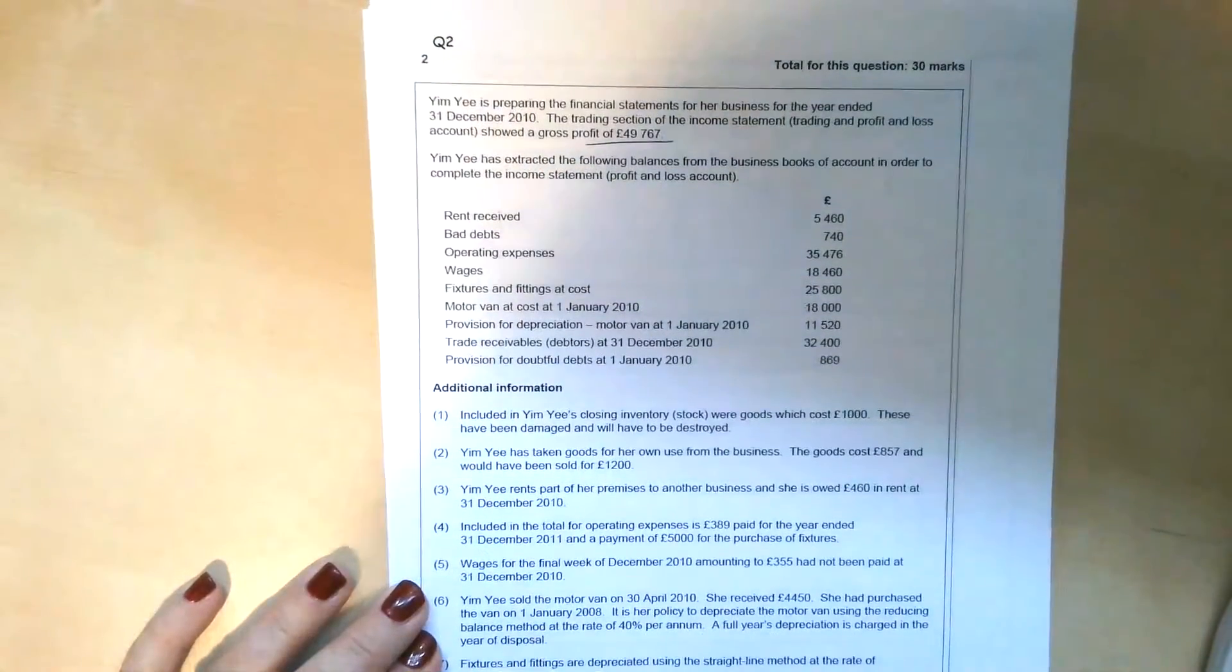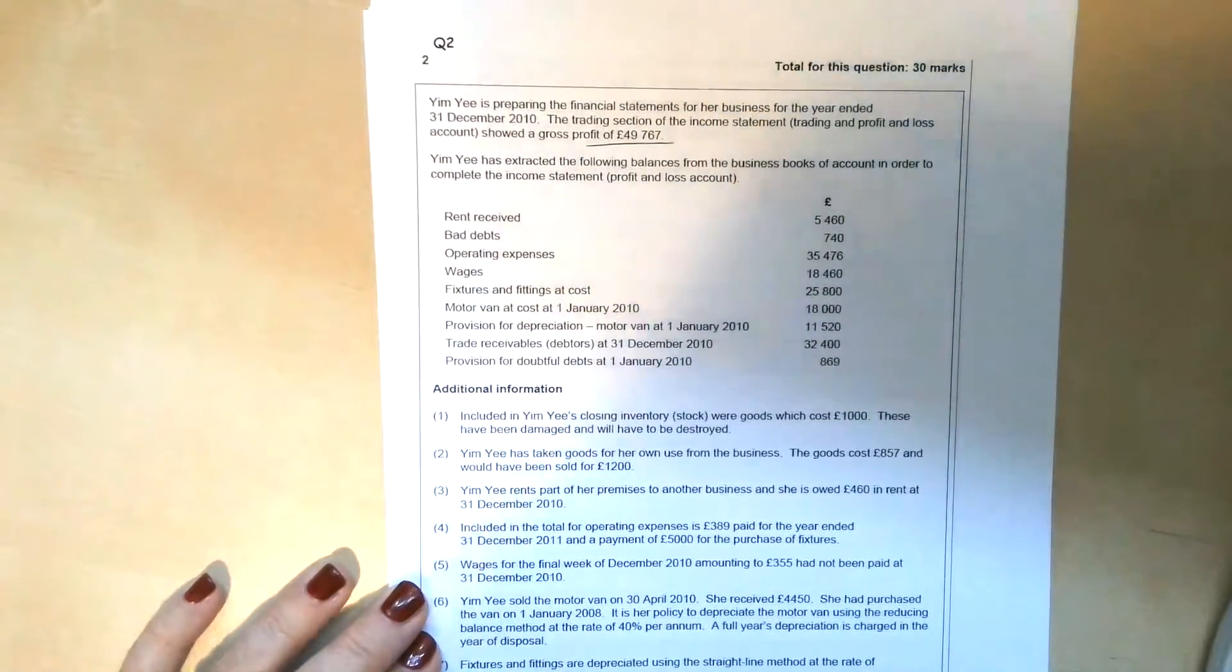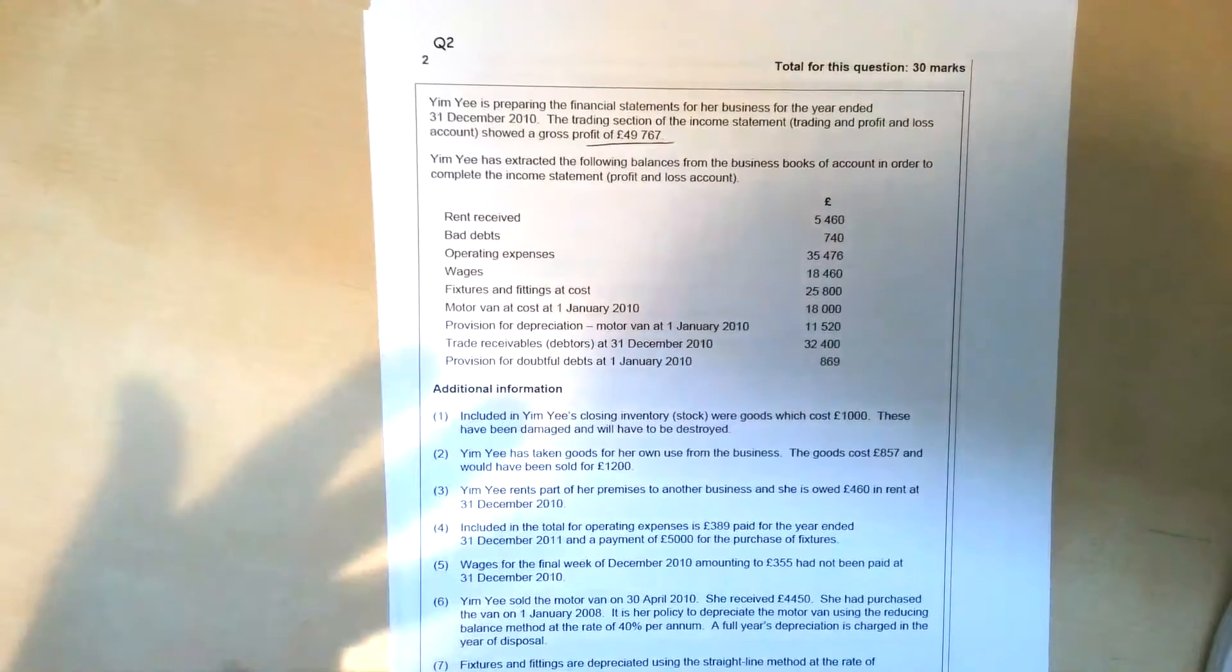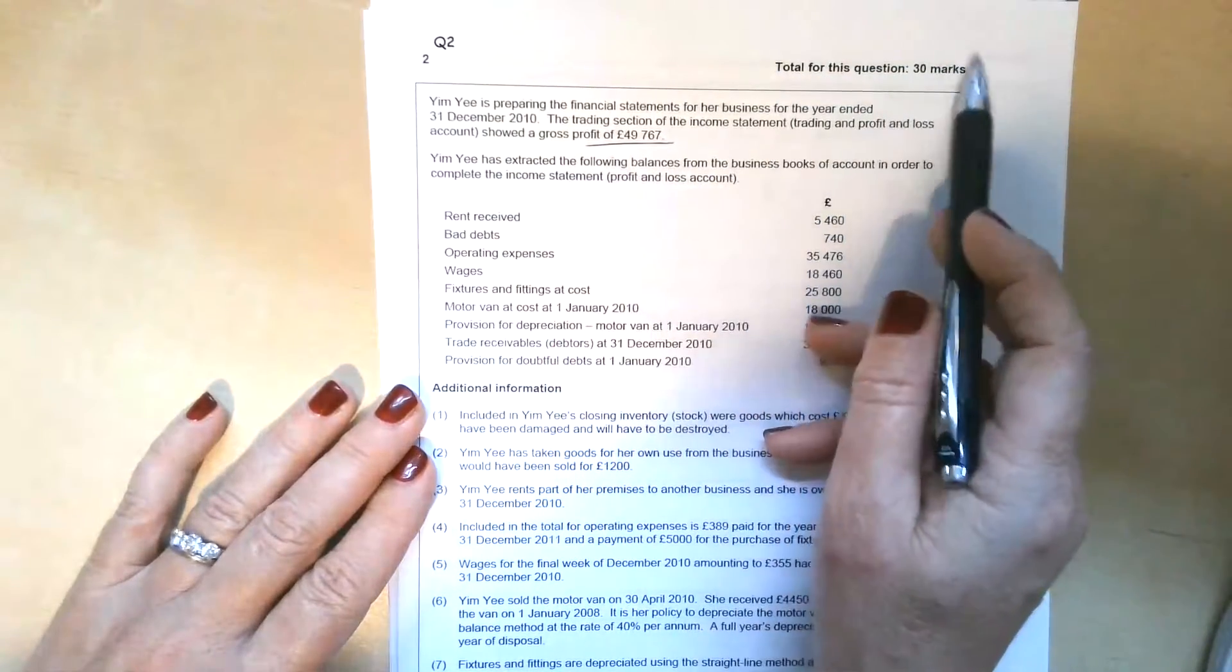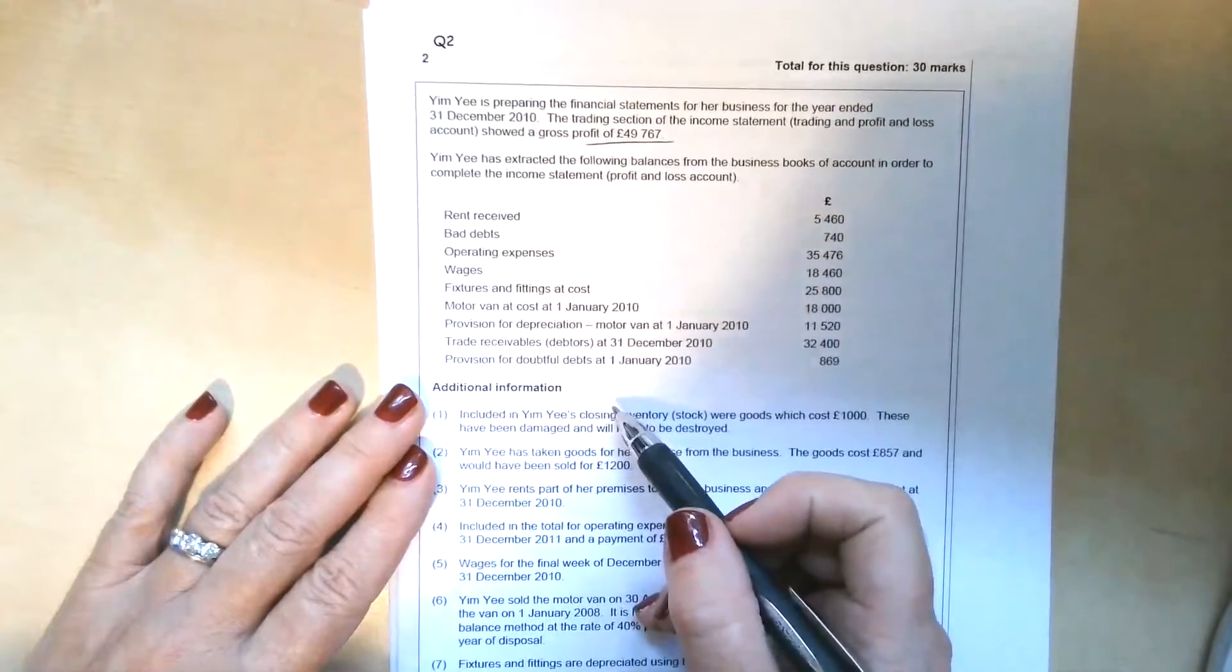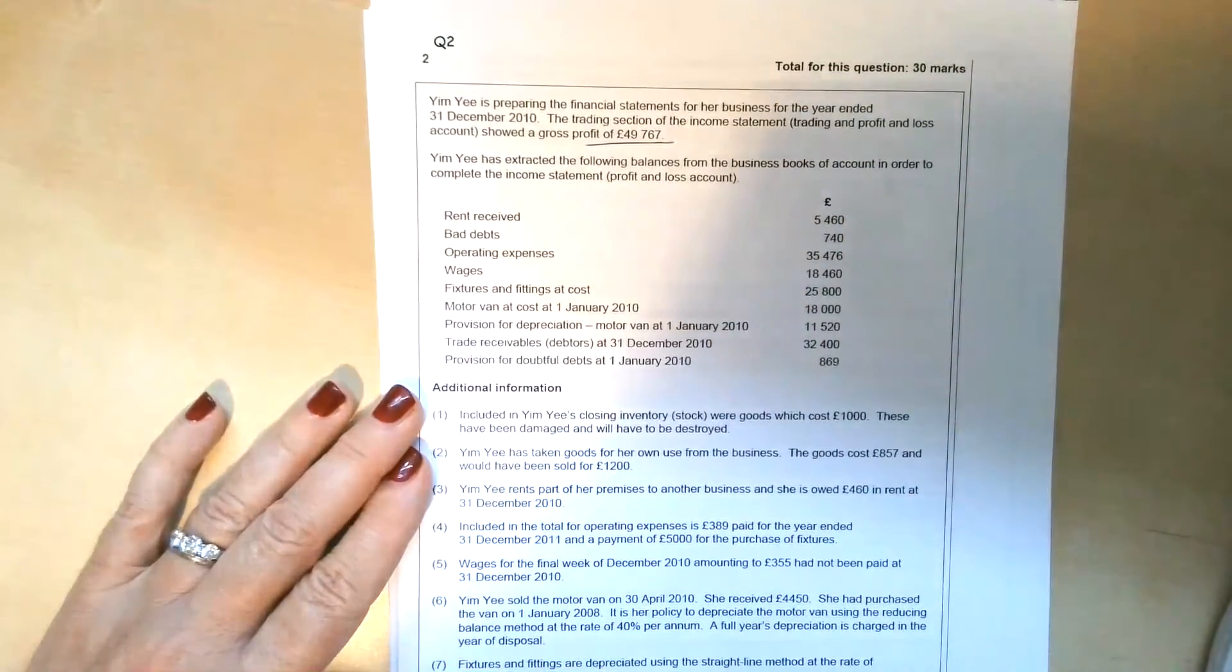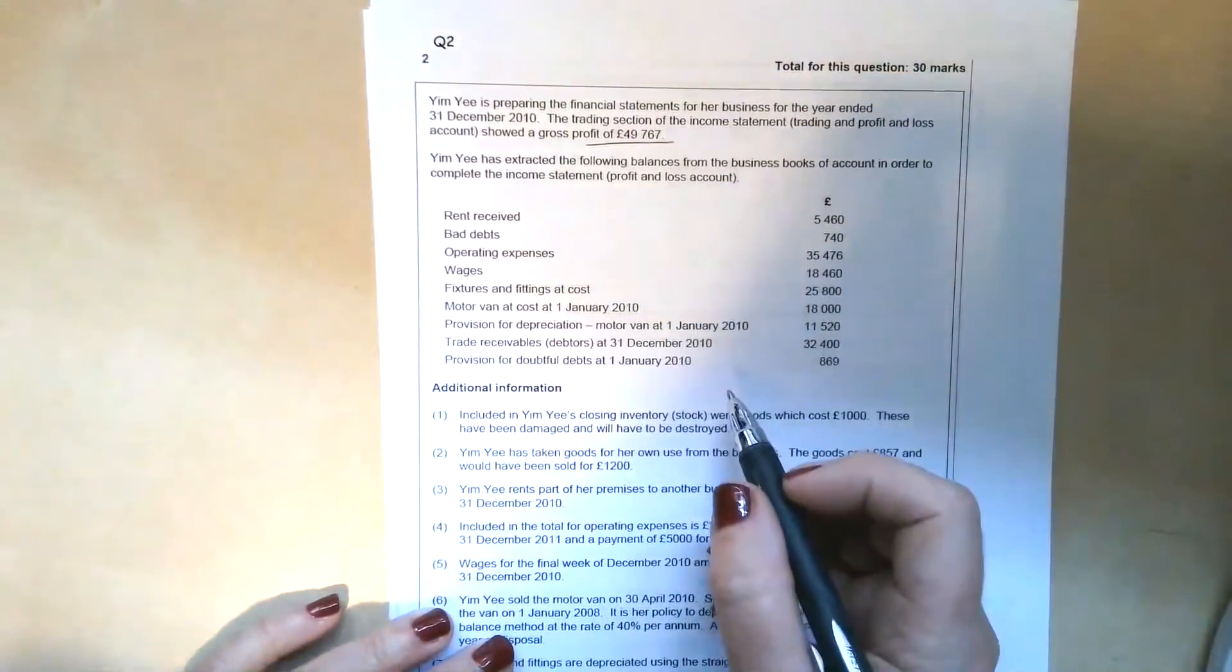This Yim Yi question came from an old ACCA paper back in January 2011. Other than the fact that it used to be called a profit and loss account, we now call it an income statement, nothing much has changed. So it's quite a useful practice question. The only thing that's really changed is you won't be getting 30 marks for something like this these days, it would be more like 14 if it appears in section B.